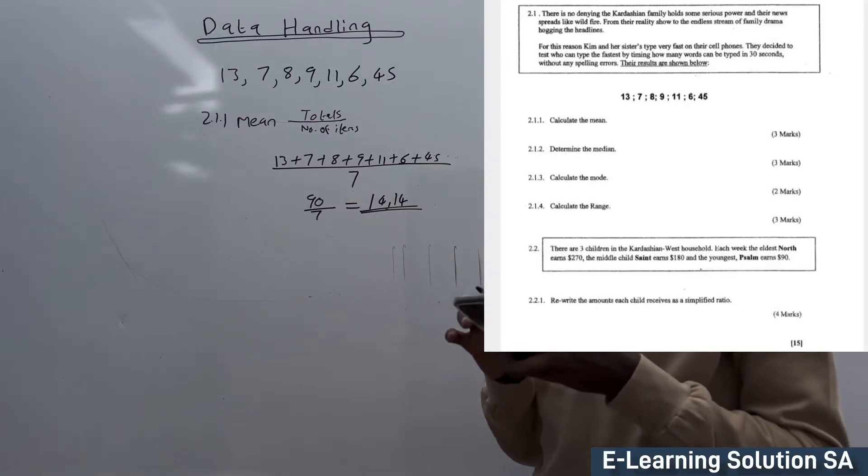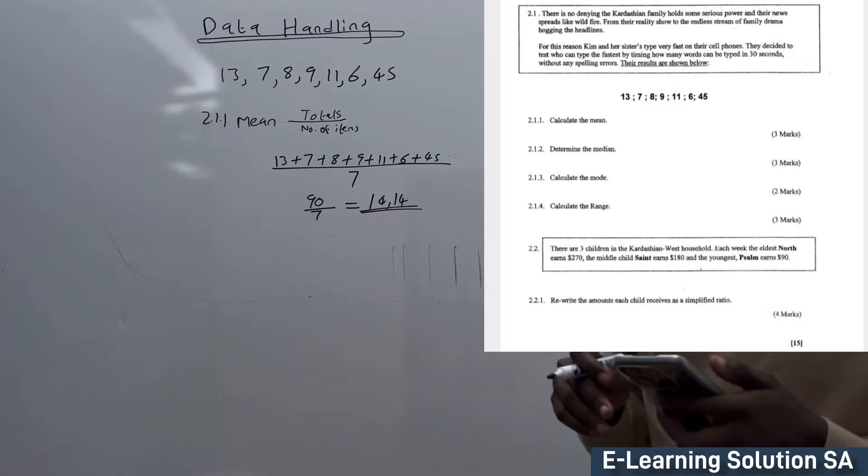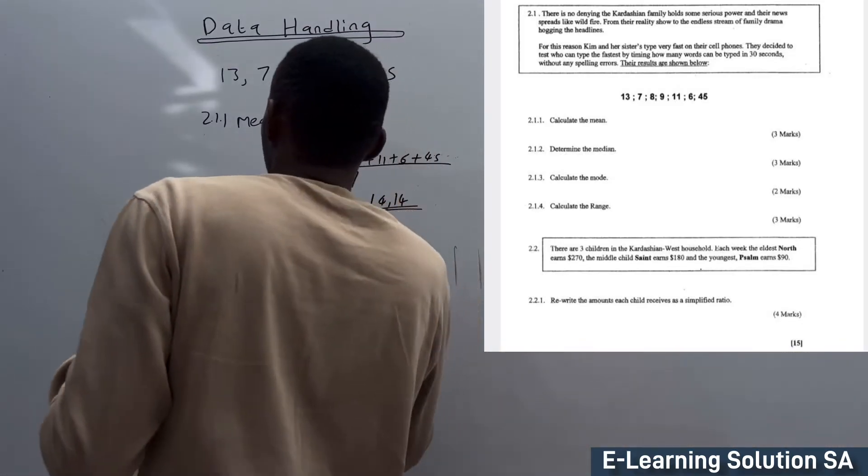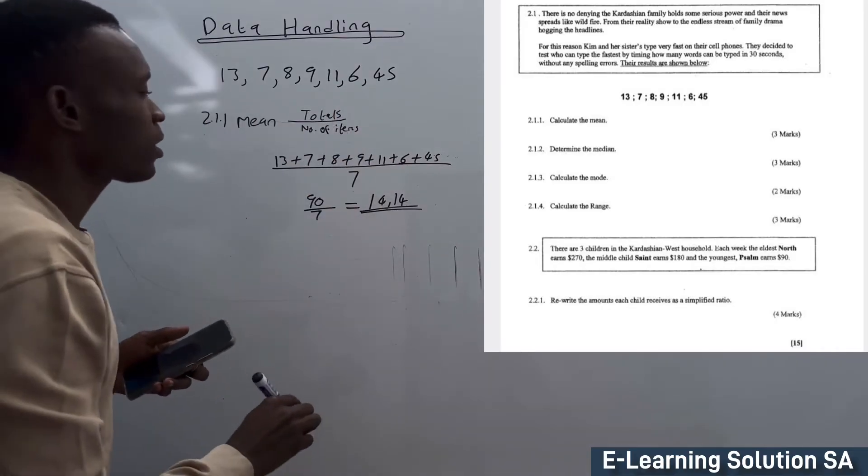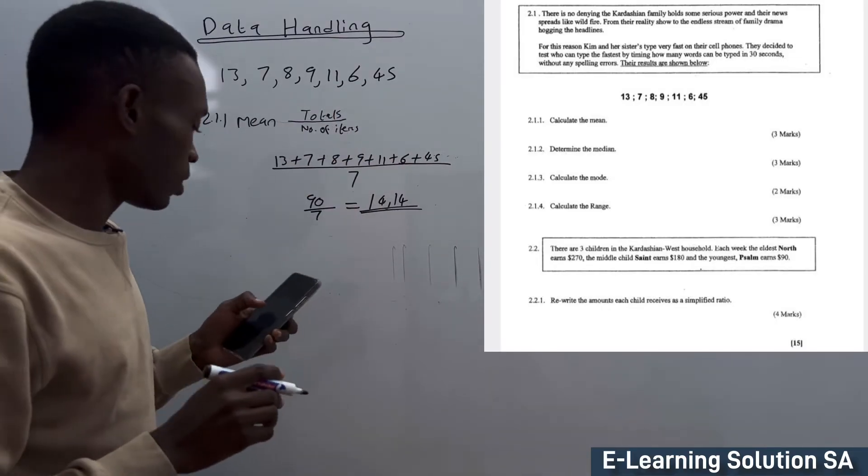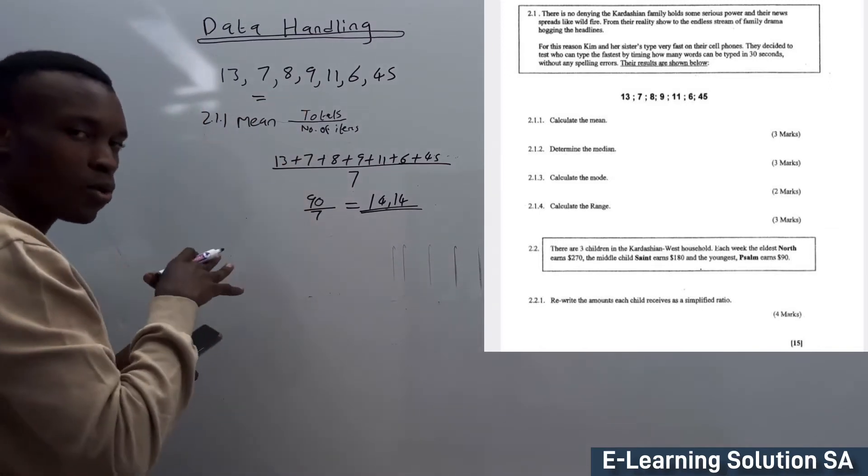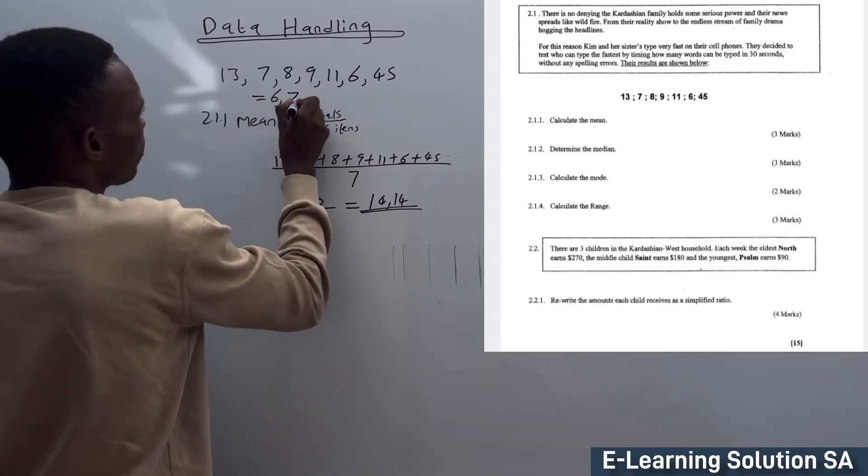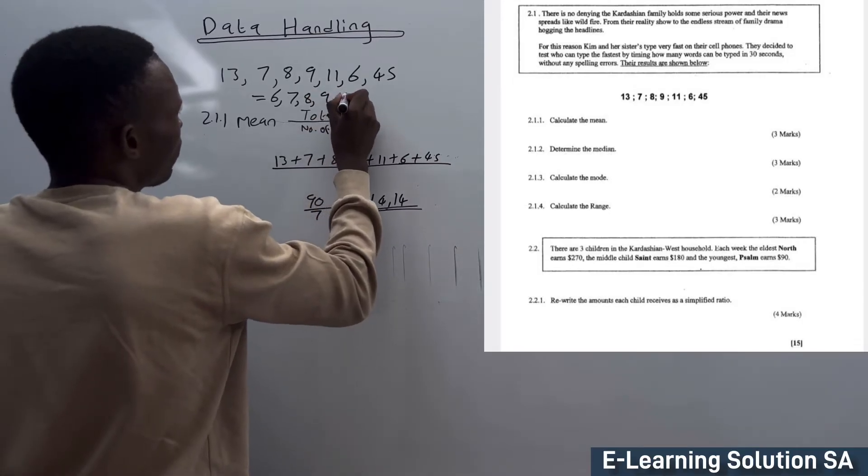Now we need to determine the median. Median is the middle number. However, if you check, these numbers are not in order, so the first step is to arrange them. Let's rearrange from the lowest to the highest: 6, 7, 8, 9, 11, 13, 45.